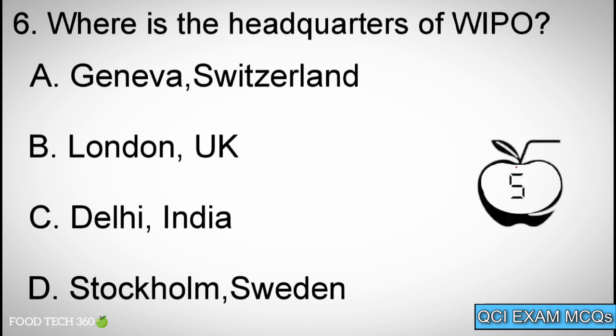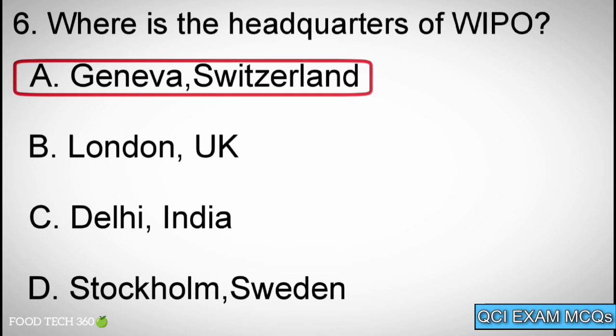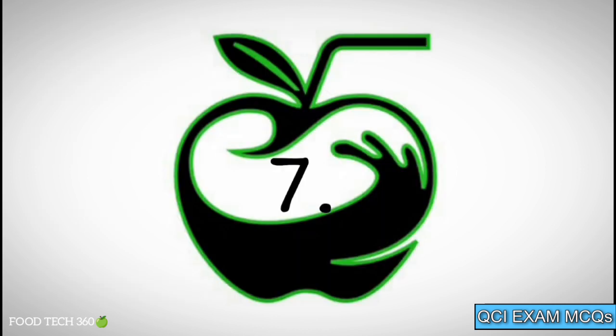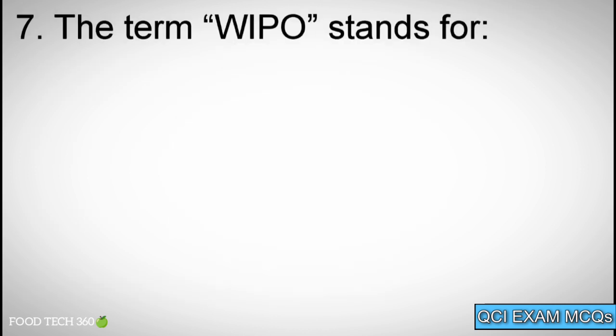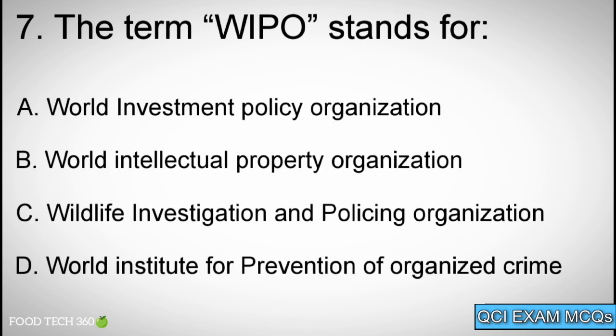Question number six: Where is the headquarters of WIPO? Options: A. Geneva, Switzerland. Question number seven: WIPO stands for? Options: A. World Investment Policy Organization, B. World Intellectual Property Organization, C. Wildlife Investigation and Policing Organization, D. World Institute for Prevention of Organized Crime.